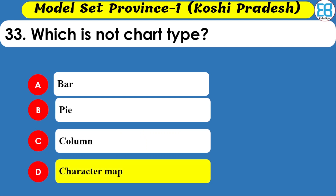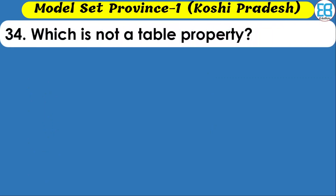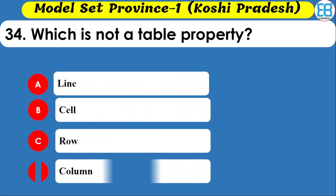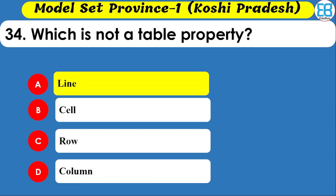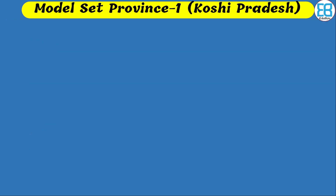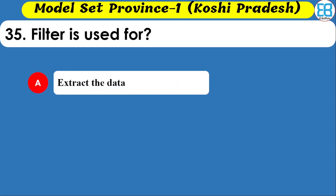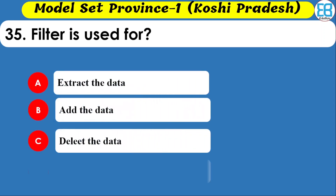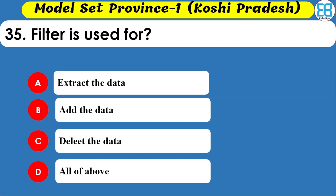Which is not a table property in a database? Options are line, cell, row, and column. The correct option is line — line is not a table property. Filter is used for which purpose? Options are to extract data and to delete data. The correct option is to extract data — filter extracts data based on a condition.